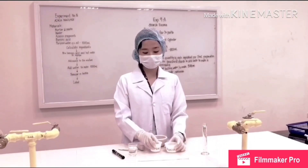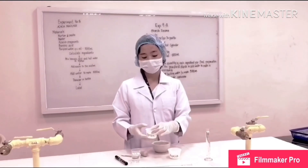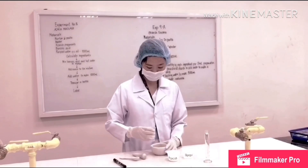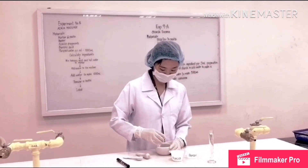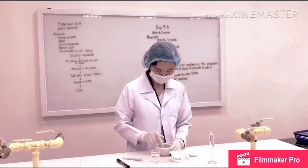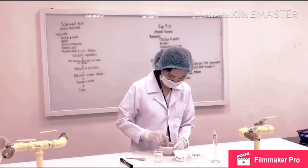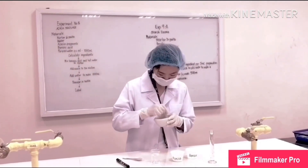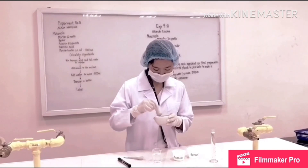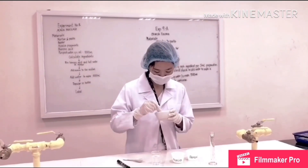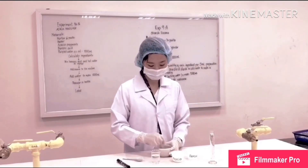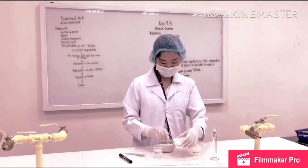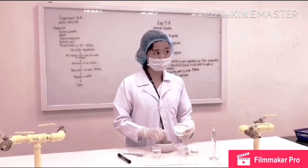We're done calculating the ingredients. So now we will proceed to mixing the benzoic acid with hot water. Third step, we will add the acacia.